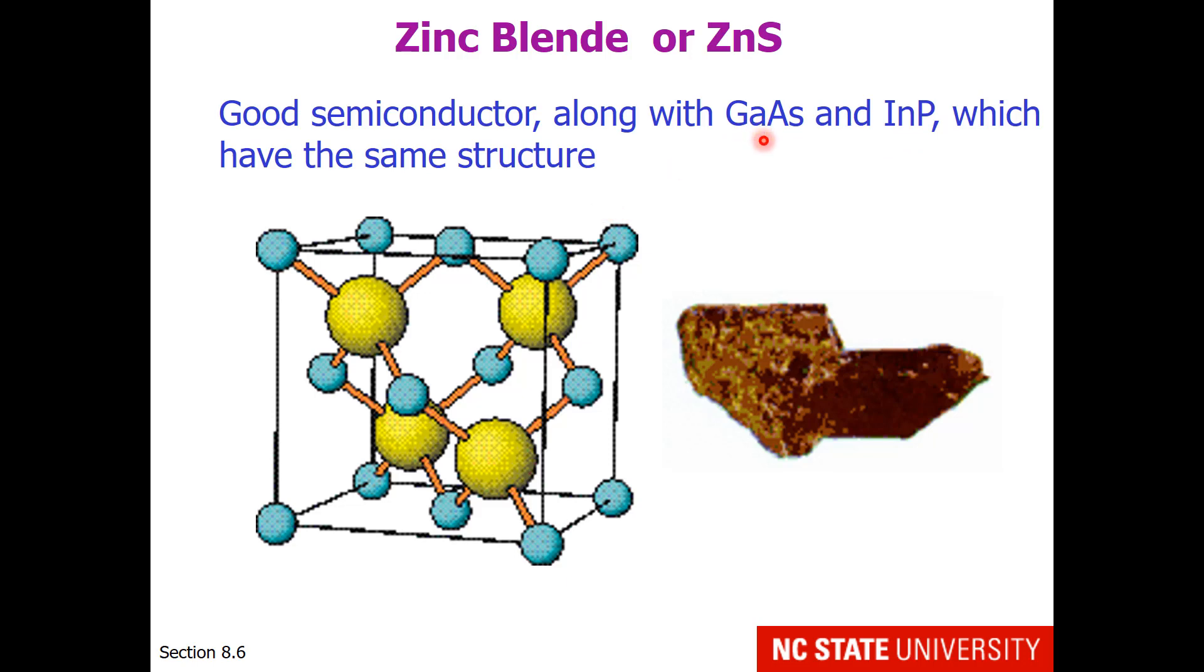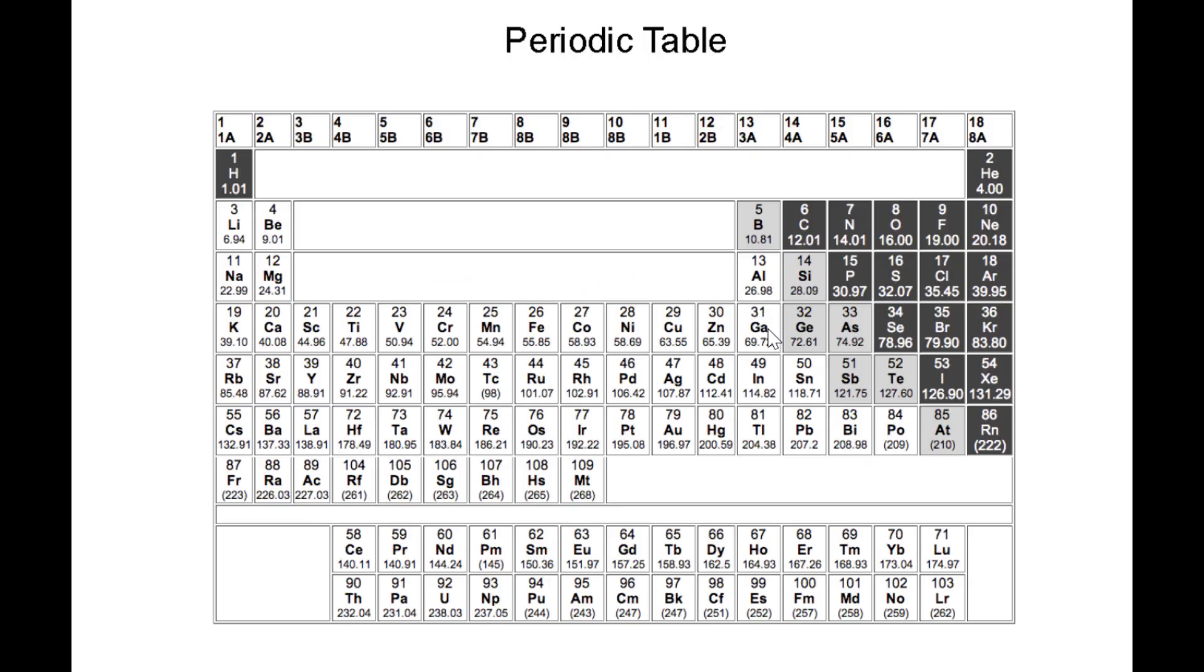I want to visit the periodic table briefly to talk about these combinations. I want you to see that gallium is in group 3 and arsenic is in group 5. So this combination of a group 3 and a group 5 network covalent compound makes a semiconductor. The same is true of indium and phosphorus. Indium phosphide is a network covalent semiconductor.